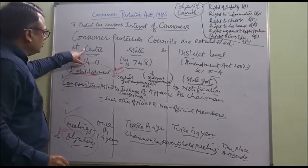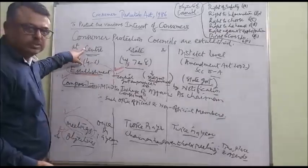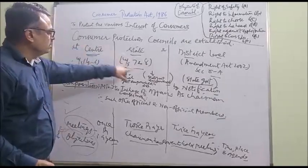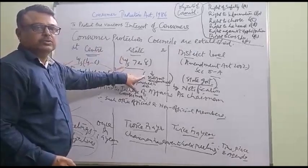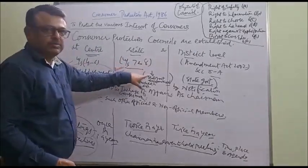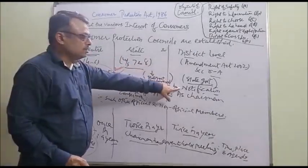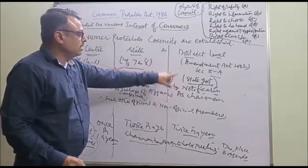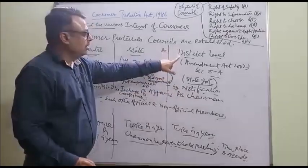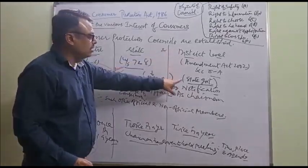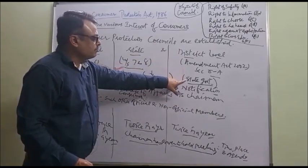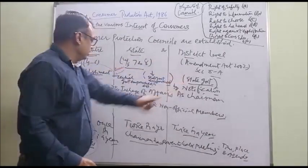Central Government is empowered to set up the Central Council. State Government is empowered to establish the State Council by notification in the official gazette, and the District level Council is also established by the State Government.